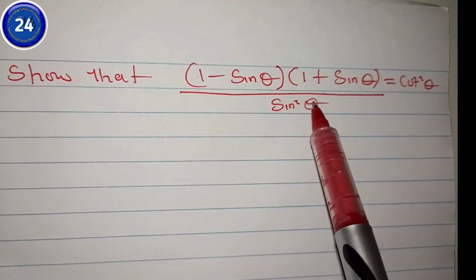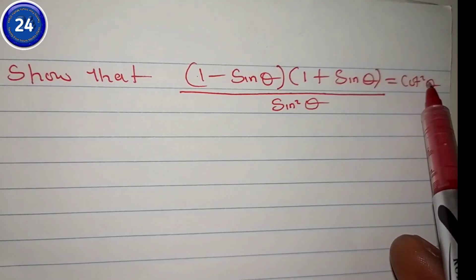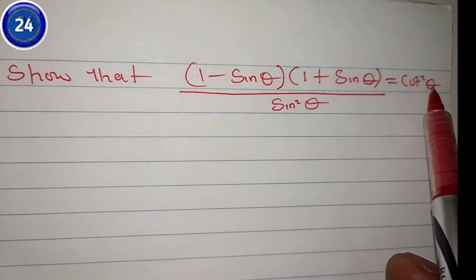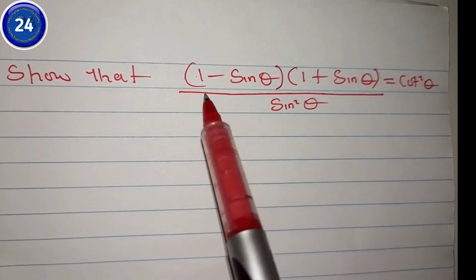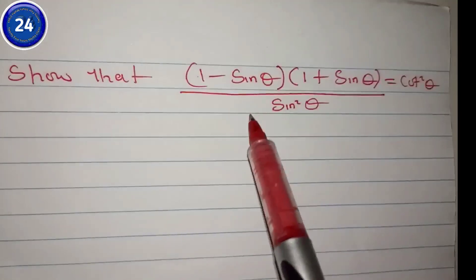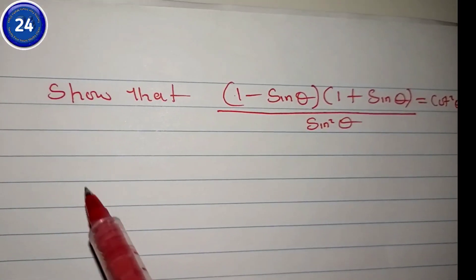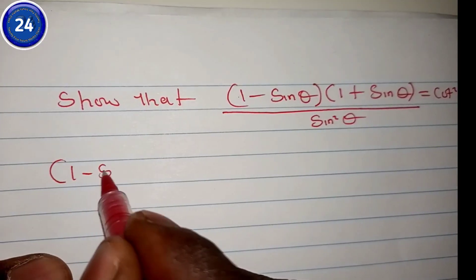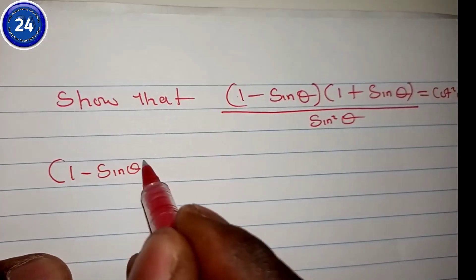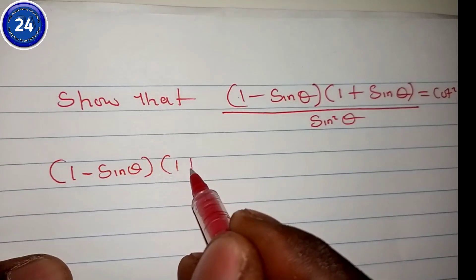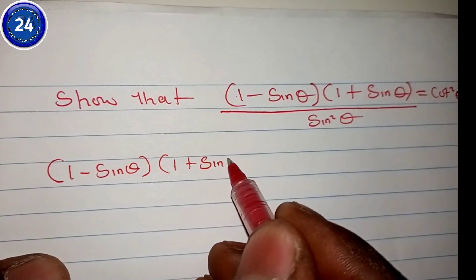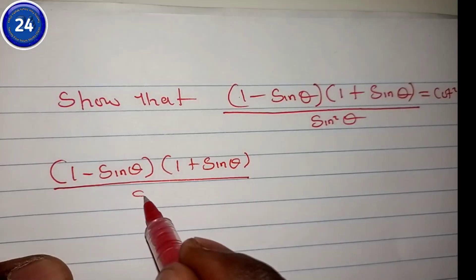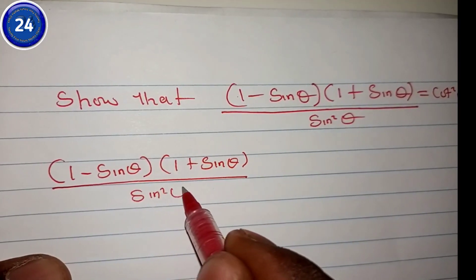In this question we are going to show that the left hand side is equal to the right hand side. So let's start with the left hand side: one minus sine theta times one plus sine theta, all over sine squared theta.